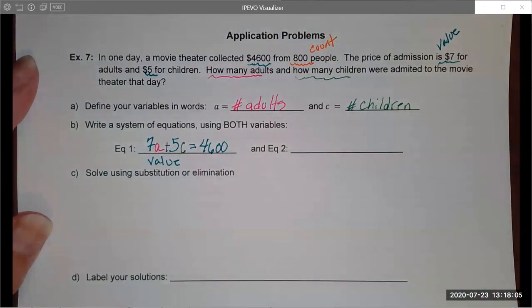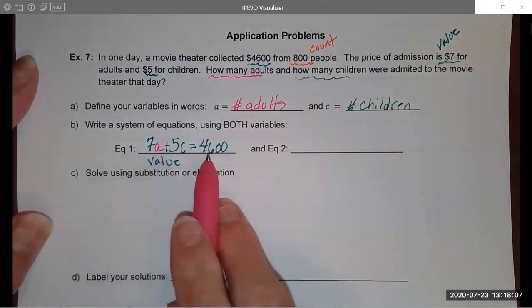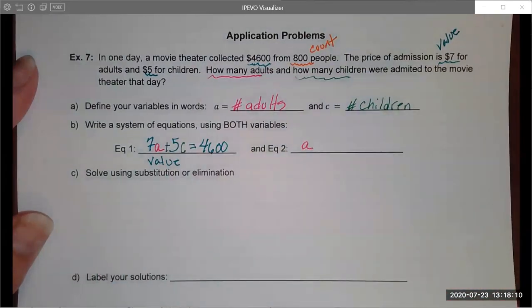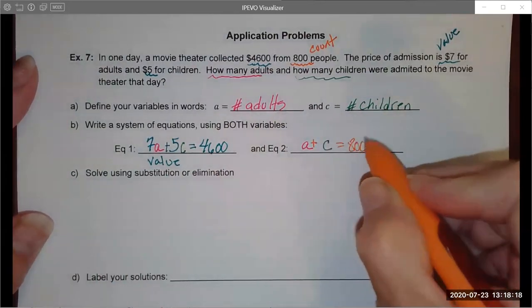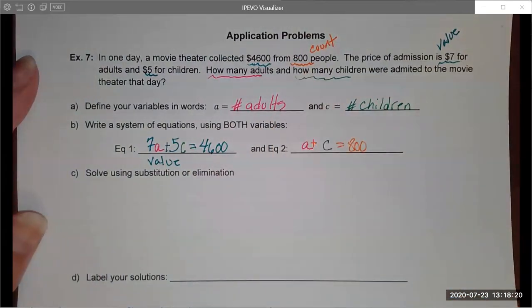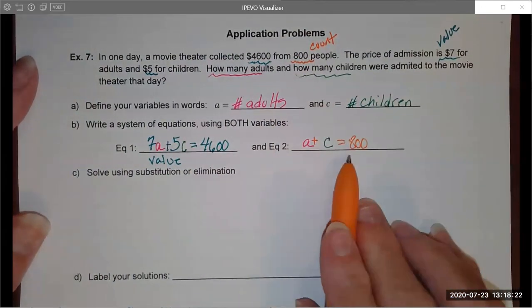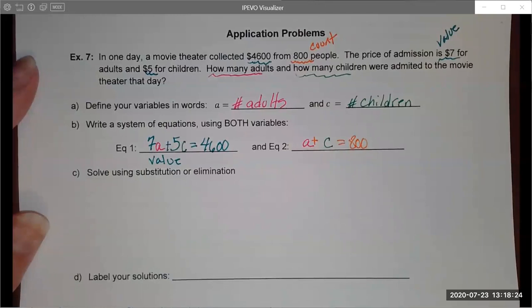My second equation does not use any of the dollar numbers. It is strictly how many adults, how many children came into the theater. I'm going to add these together and they better add up to 800 because that is our counting number. So we're just counting people going in.